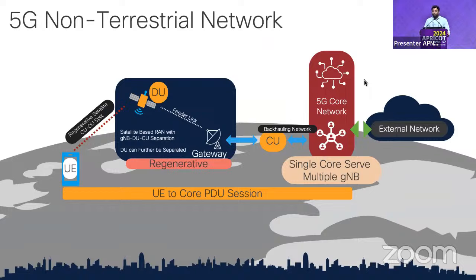3GPP discusses splitting the 5G base station gNB into DU and CU, where the DU can be placed on the satellite to handle lower layers of the network stack, while the CU handles upper layers on the ground. The benefit is that UE-to-core video sessions remain intact — users won't notice the implementation.